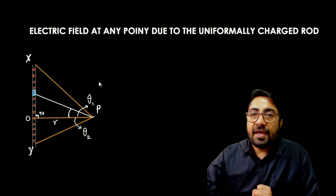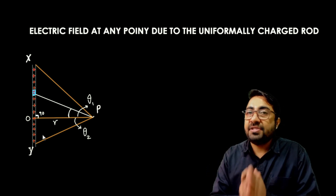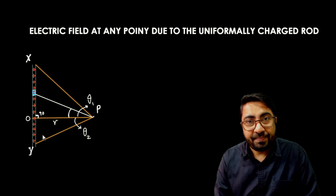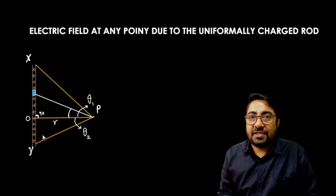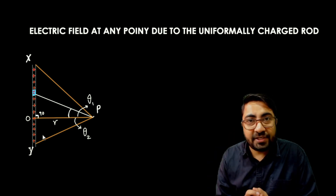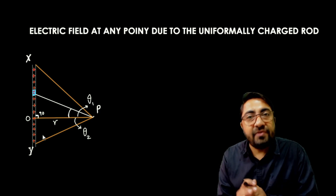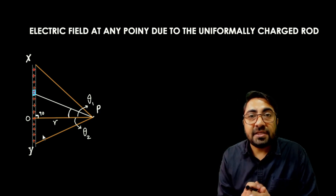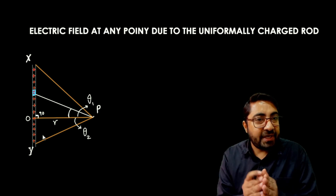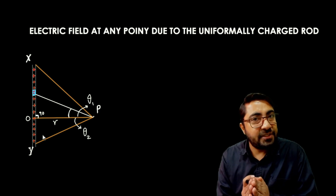If you can see the picture here, we have considered that X, Y is a uniformly charged rod. The total charges are on the length of this wire, so it has a linear charge density. We have already studied in the previous lecture what is the linear charge density — it is the charge per unit length. So let's say this uniformly charged rod has linear charge density lambda.